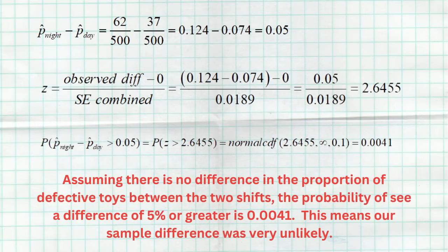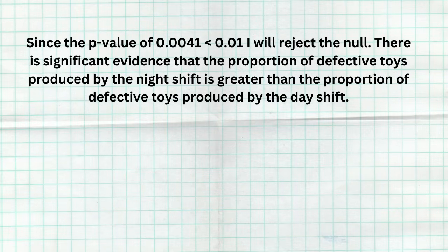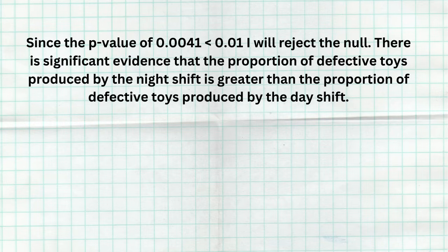Since our p-value of 0.0041 is less than 0.01, we reject the null. There is significant evidence that the proportion of defective toys produced by the night shift is greater than the proportion from the day shift. Our observed 5% difference was extremely unlikely under the null, so the logical conclusion is the null is wrong — the night shift truly does have a higher proportion of defective toys.